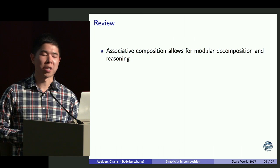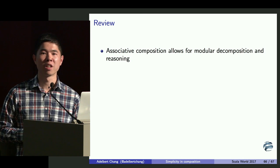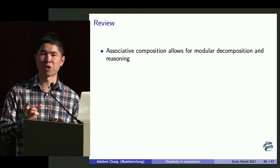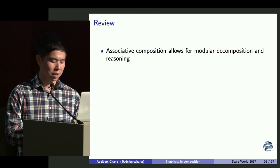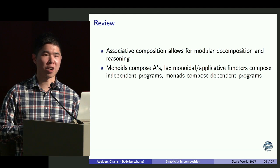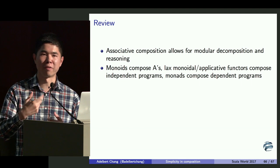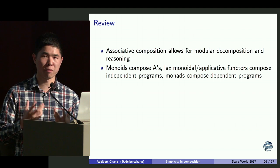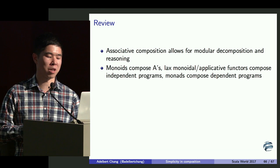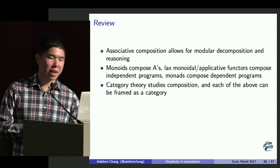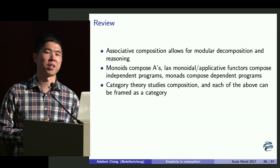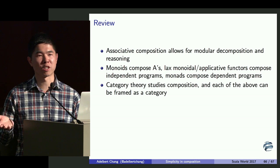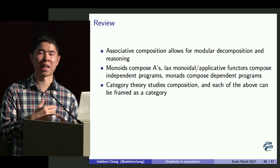To review: associative composition allows for modular decomposition and reasoning. When building programs and APIs, we want to build them using things that allow composition — in the sense that given two things gets us another thing — and that composition should be associative so we can reason about them. For composing plain first-order values, use monoids. For composing independent programs, use applicative functors or lax monoidal functors. For composing dependent functions or programs, use monads. The reason many functional programmers study category theory is because it gives a uniform language for talking about composition, and anything discussed in category theory can be translated to computation and programs.